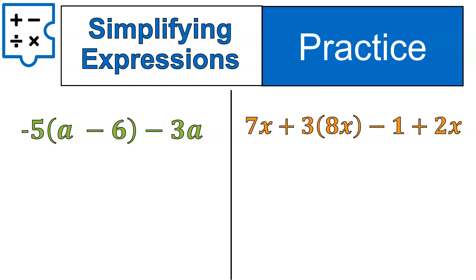All right, time to look through it. In our green question, I'm going to begin by distributing that negative 5 times each term inside the parentheses. Negative 5 times a gives me negative 5a. Negative 5 times negative 6 gives me a positive 30. And then the negative 3a simply gets written down. It's outside the parentheses, so we don't have to multiply anything. We just write it down.